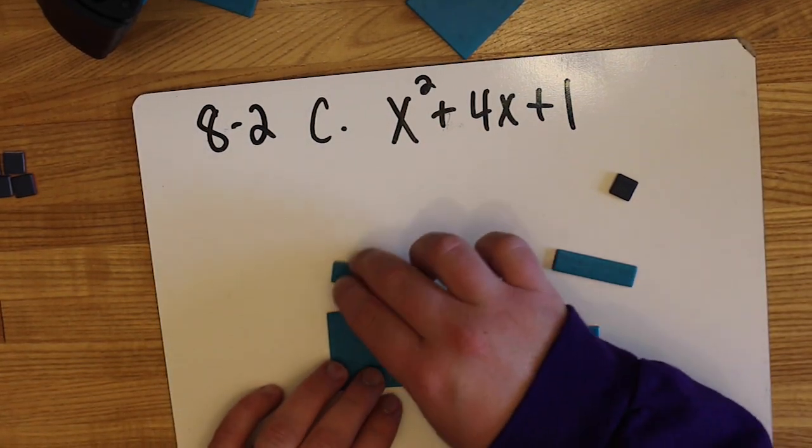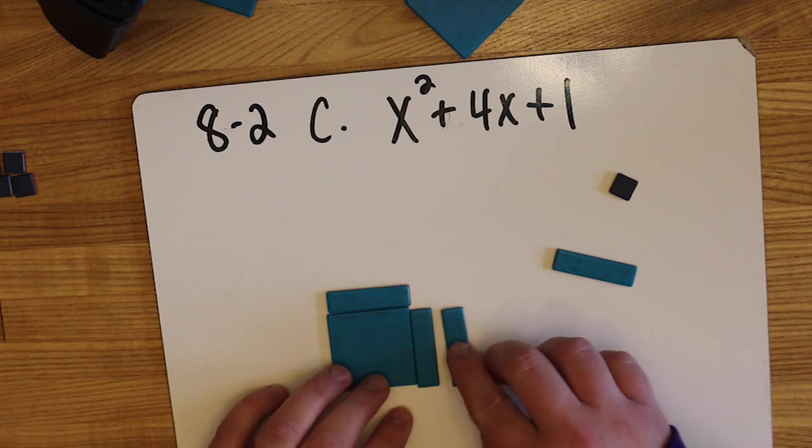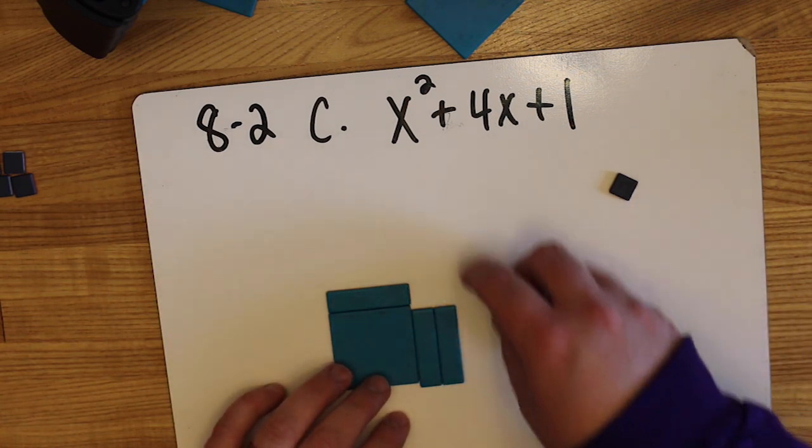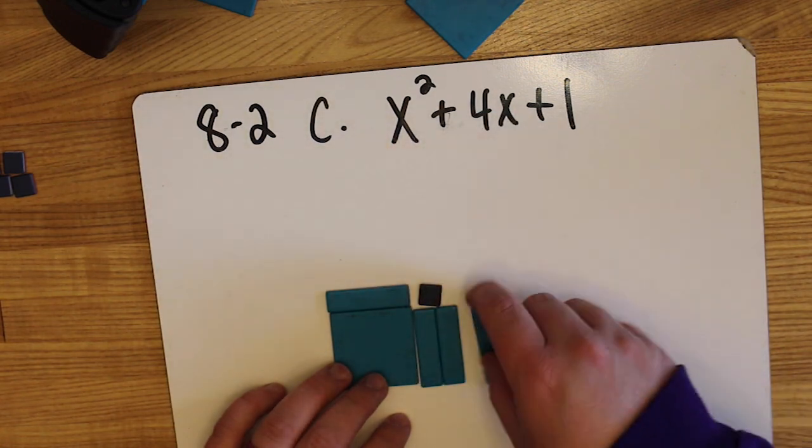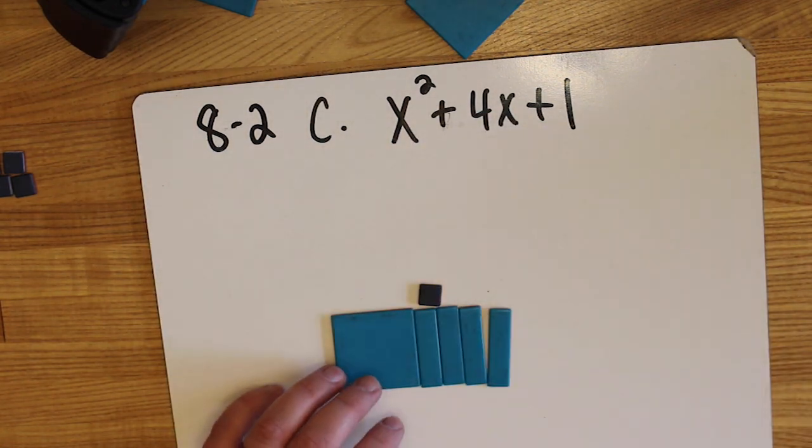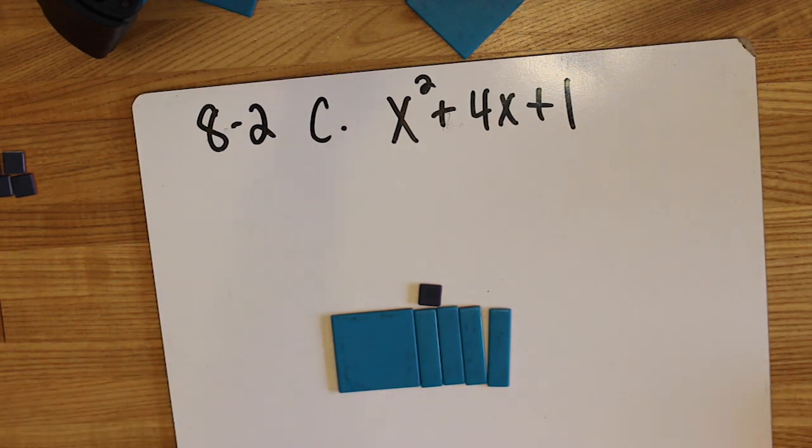In part C, we've got x squared plus 4x plus 1. We're building a rectangle out of the tiles. You should see that this one is not going to work out. In this case, it's not factorable.